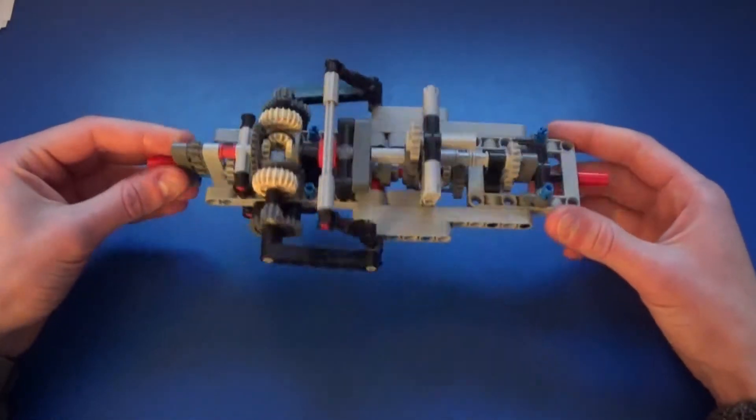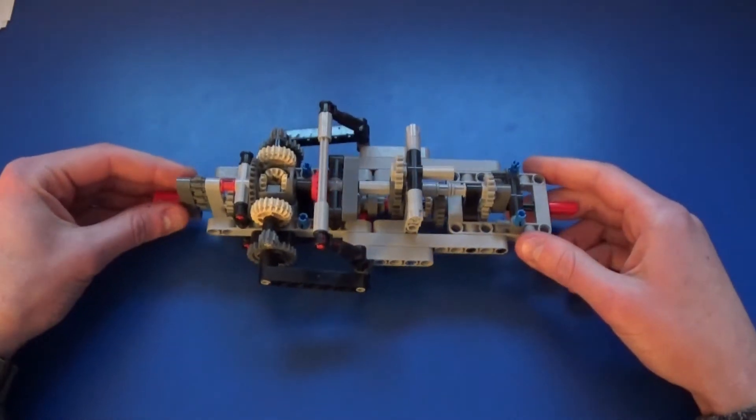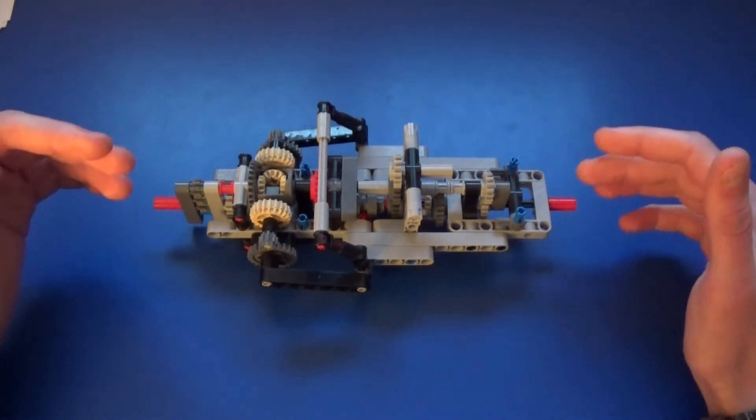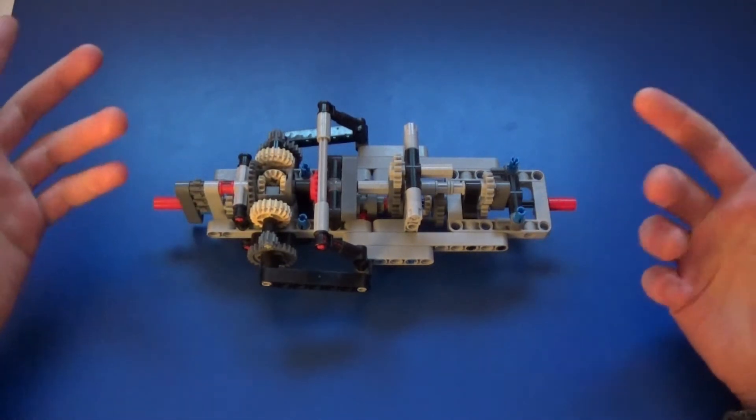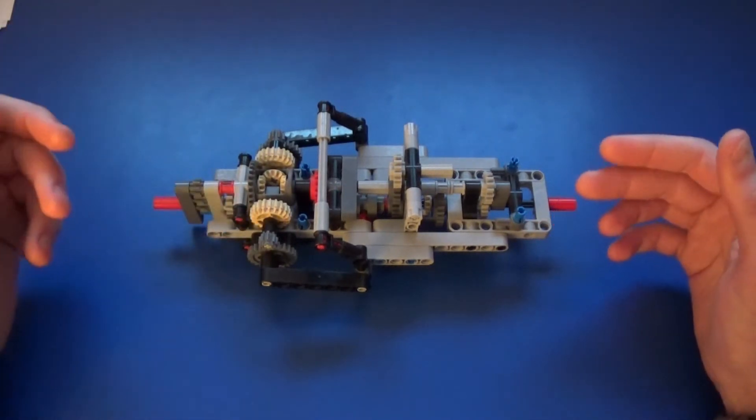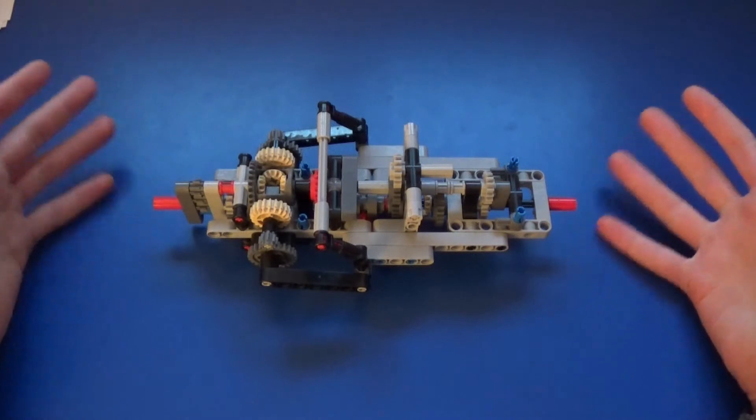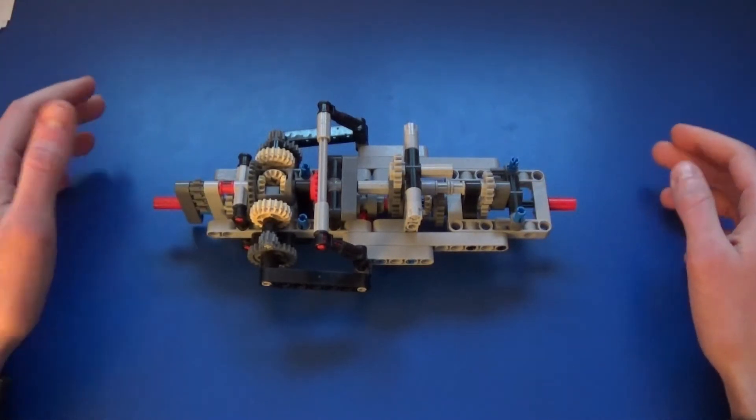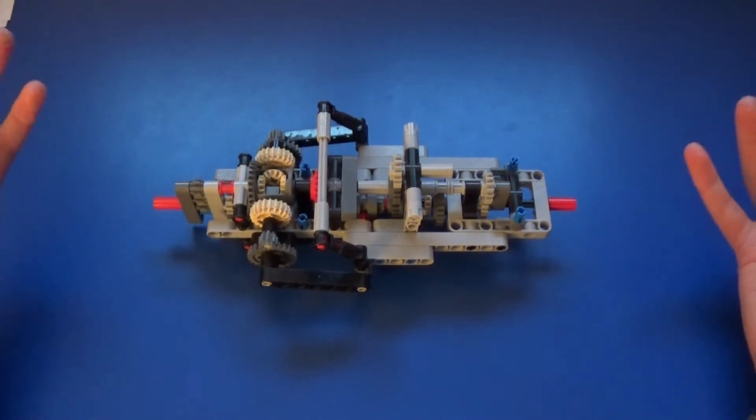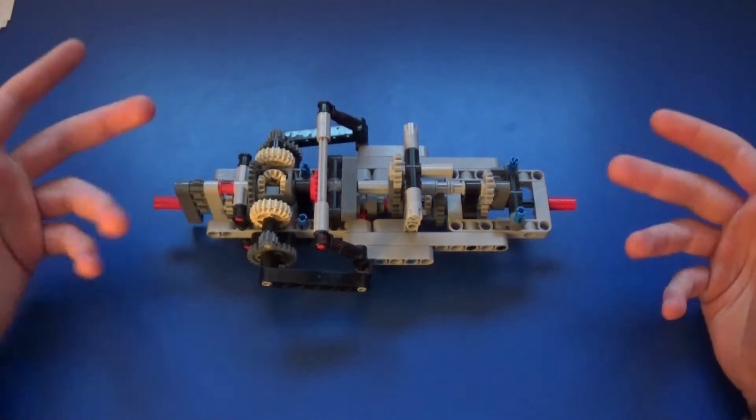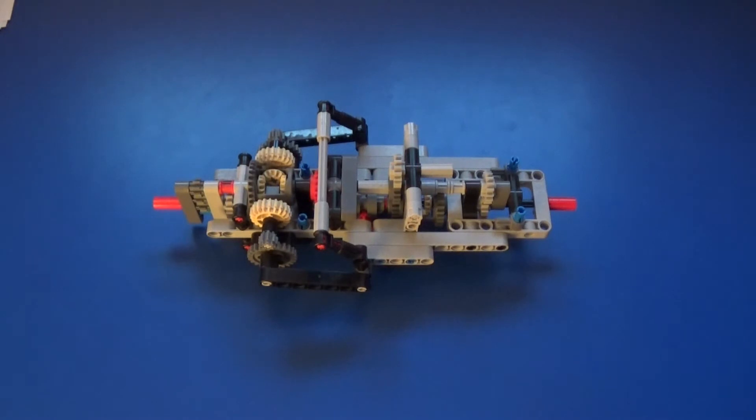This is a locking differential, and an automatic one at that, so it detects wheel spin. If there's too much wheel spin, it will lock the differential. Now, I don't have sensors - there's nothing electronic here. I could make a much more complicated version if I had some Mindstorms components, but I don't. I think it's an interesting exercise to see if I can make it purely mechanical.